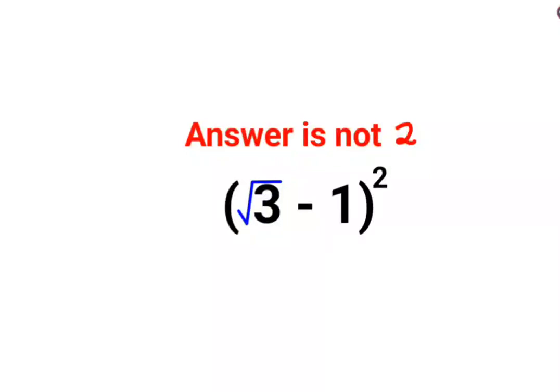Welcome everyone. So today we are going to understand why the answer for this one is not supposed to be 2. Because here we have root 3 minus 1 the whole square.